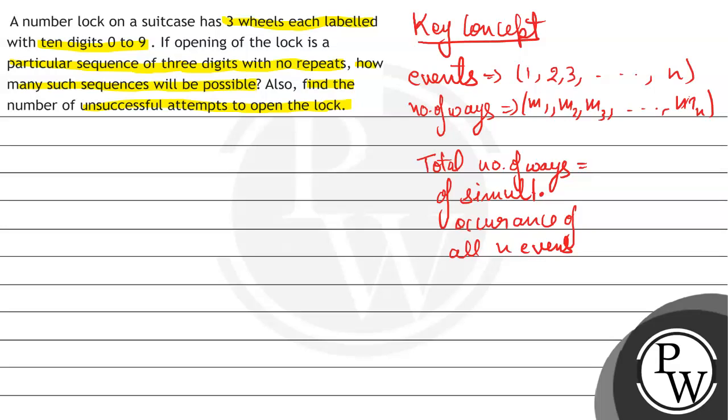is equal to हो जाएगा, सारे events के separately जो number of ways हैं, उनका multiplication: M1 × M2 × M3 × ... × Mn.